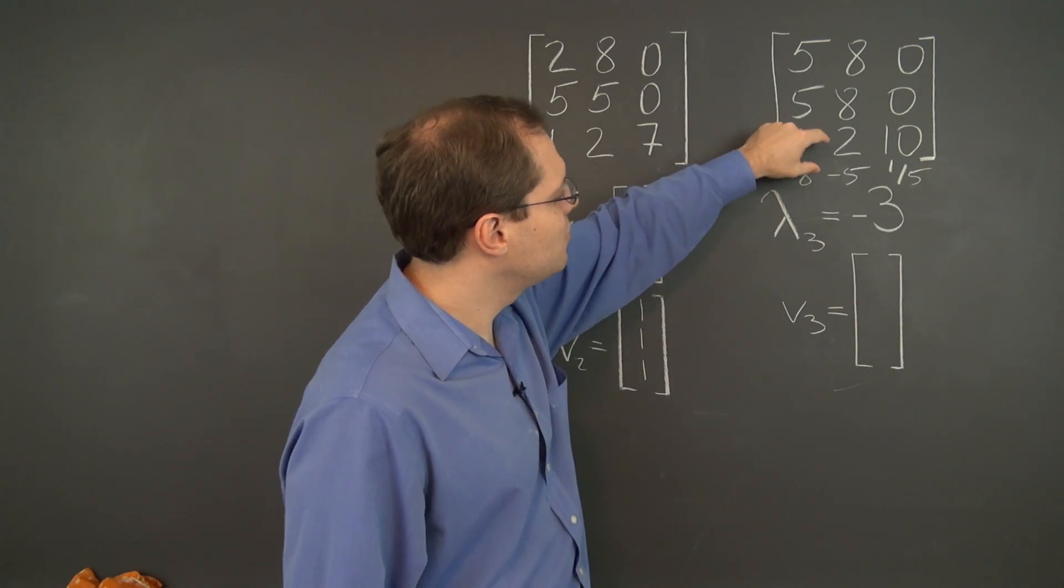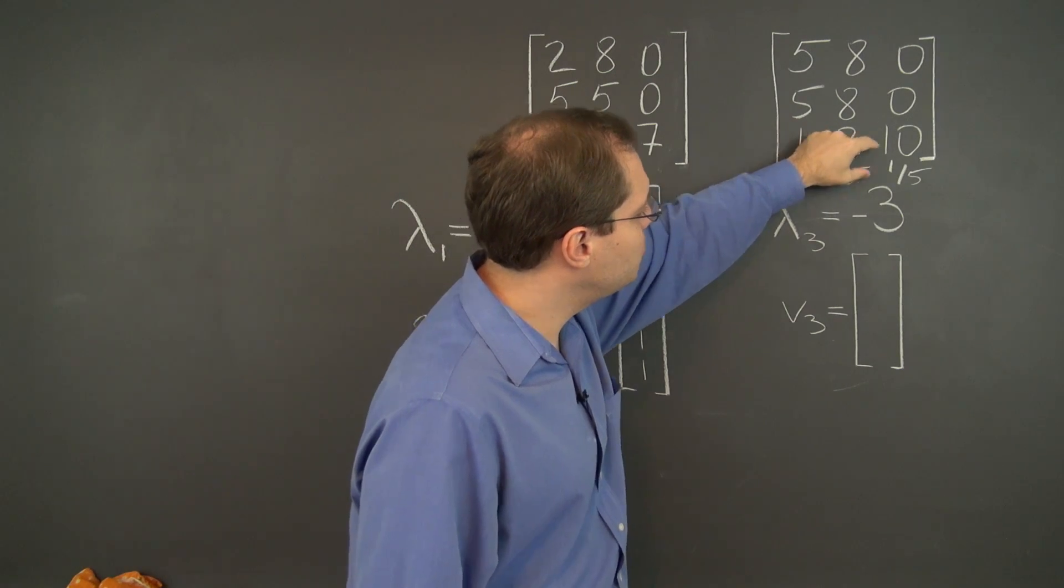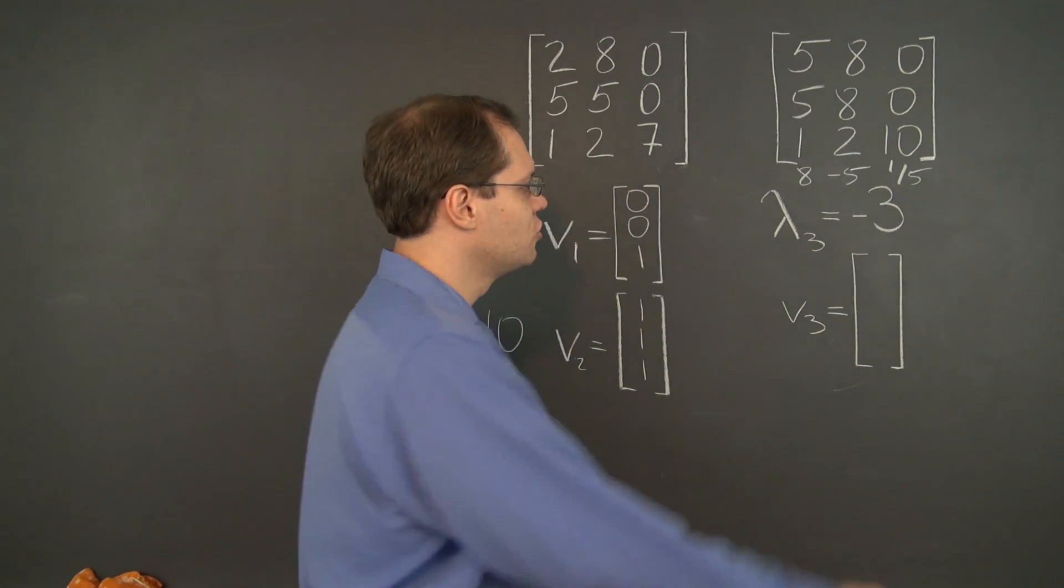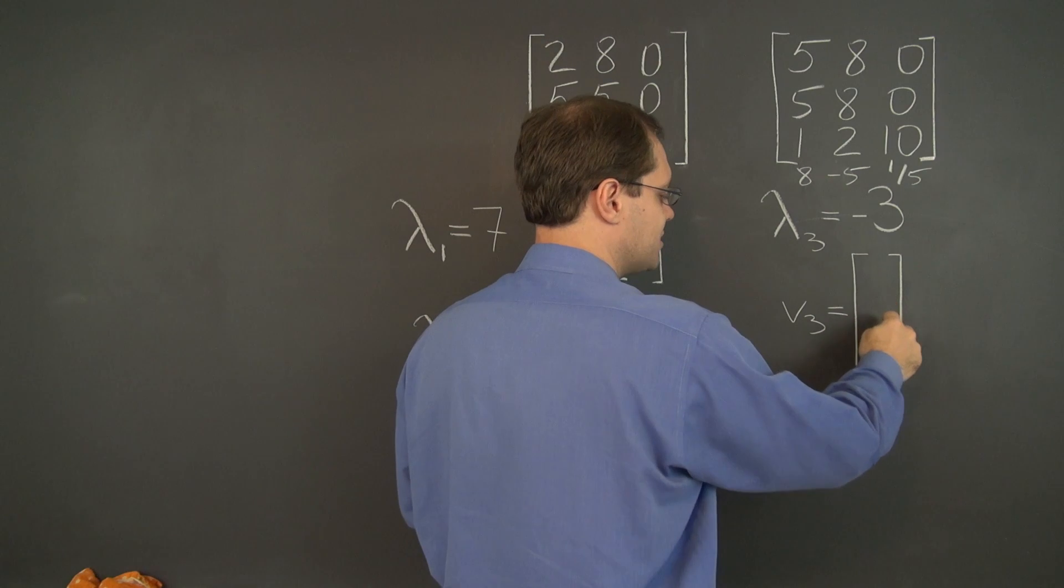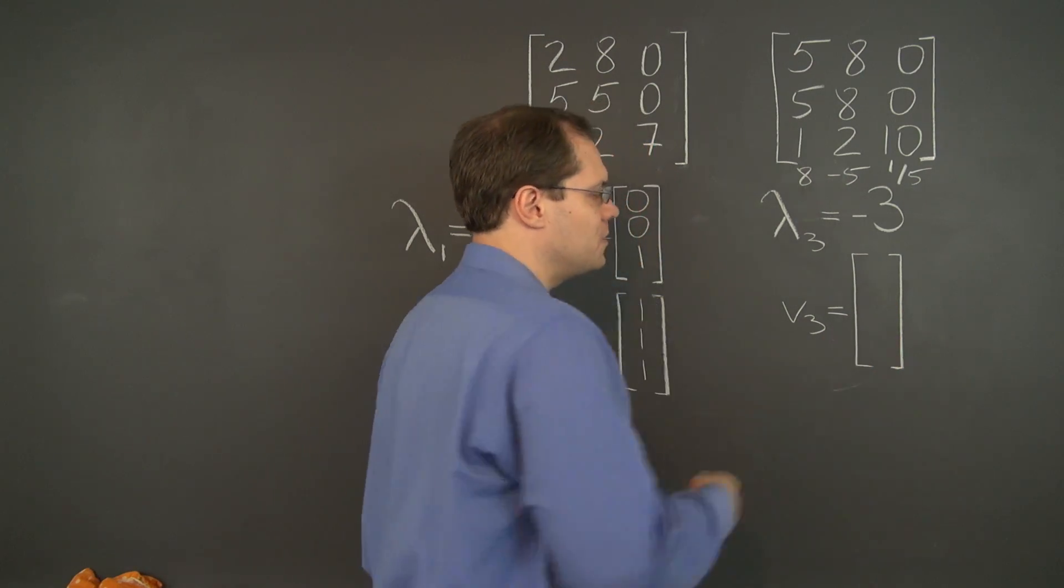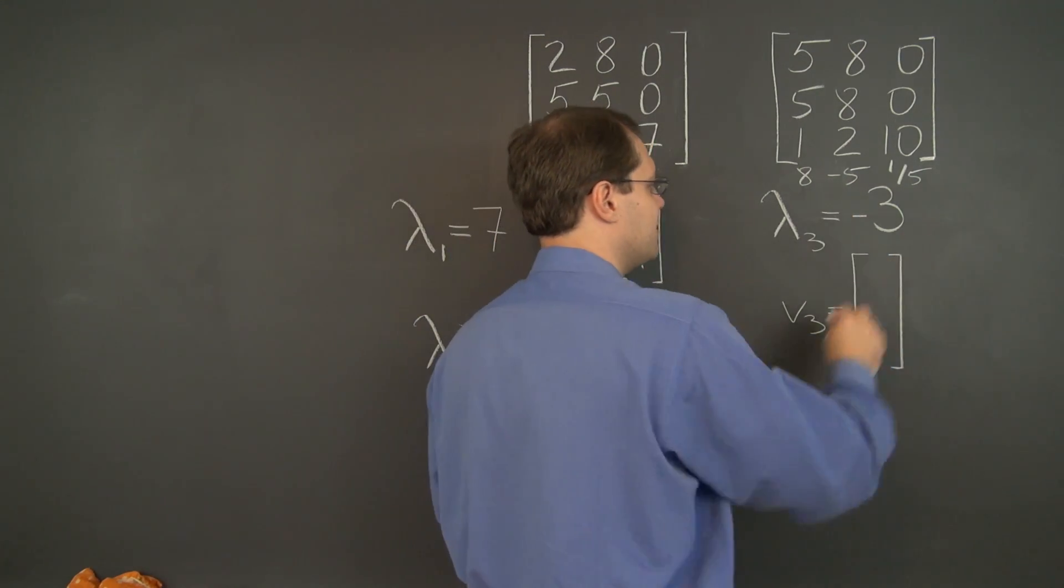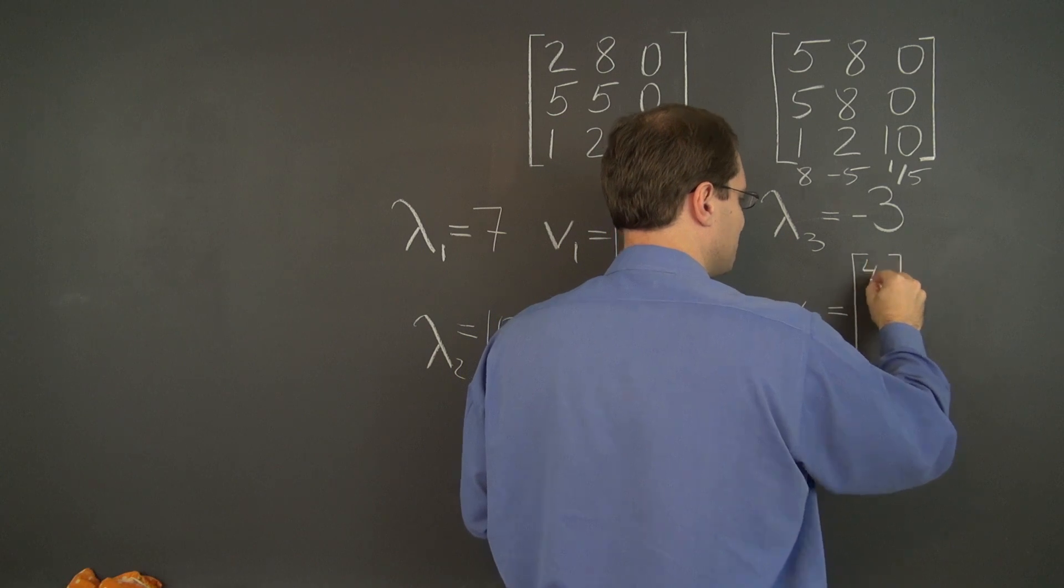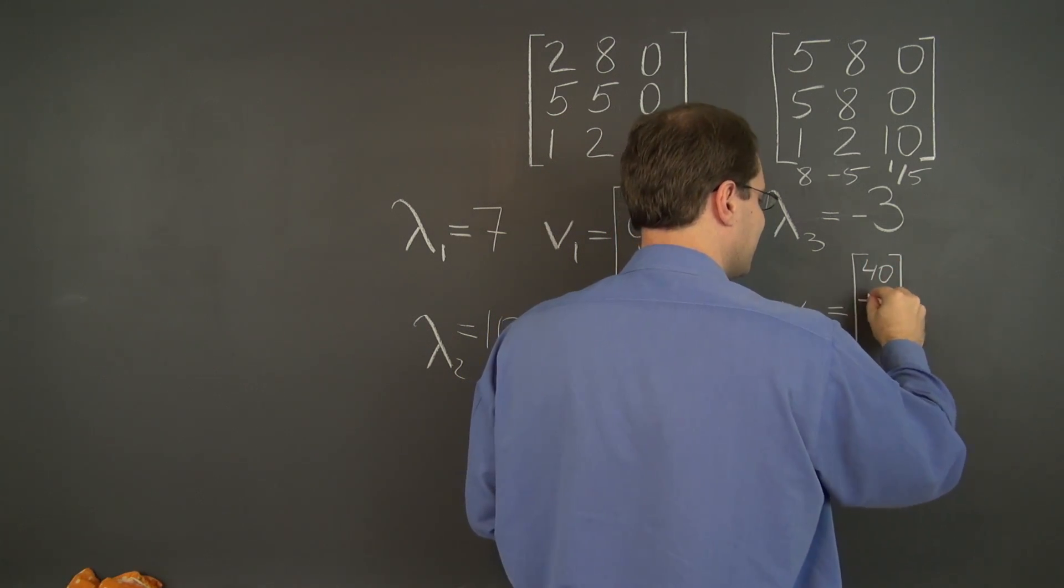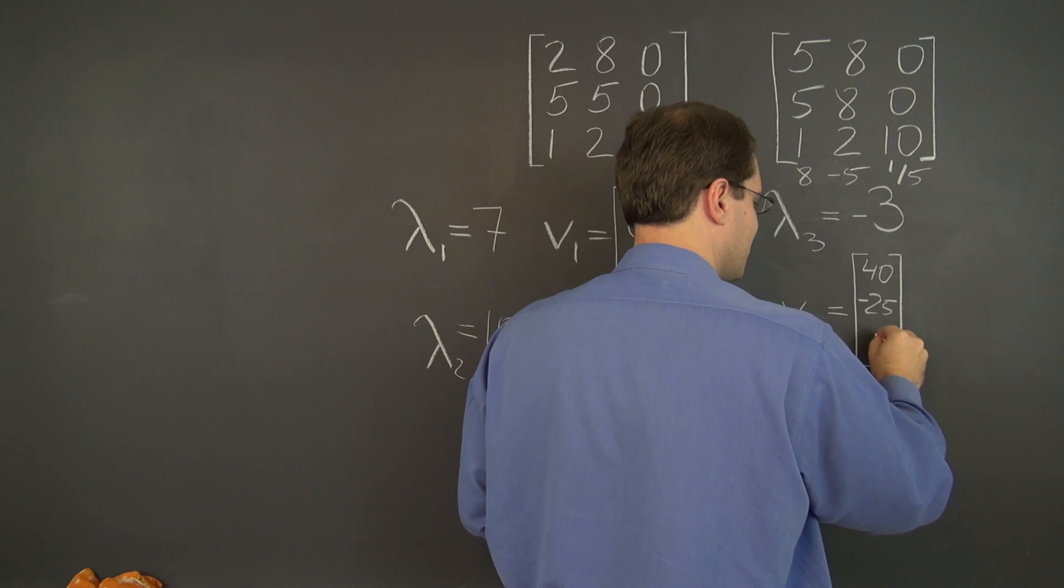Let's just make sure of this: 8 minus 10 plus 2, that's right. So we could have written 8 minus 5, 1 fifth here, but because we prefer integers let's multiply the whole thing by 5 and we end up with 40, negative 25, 1.